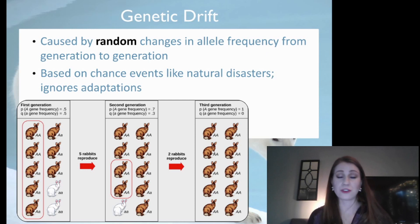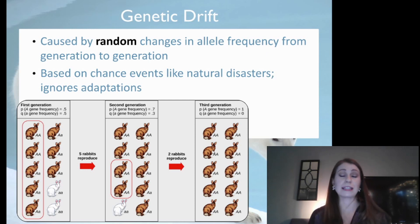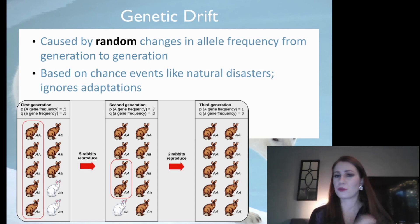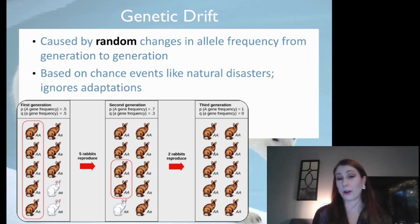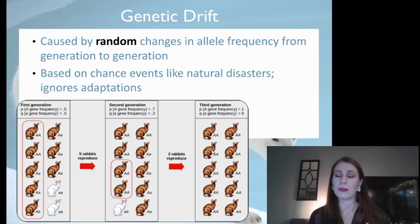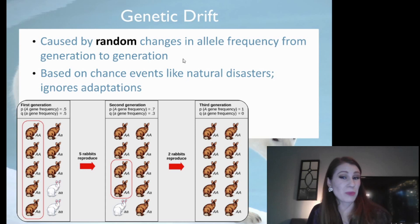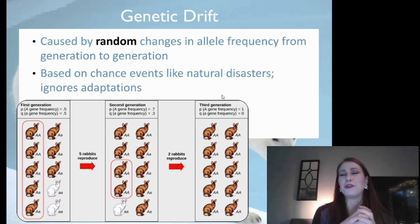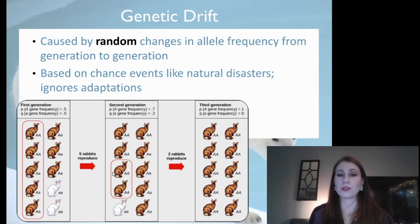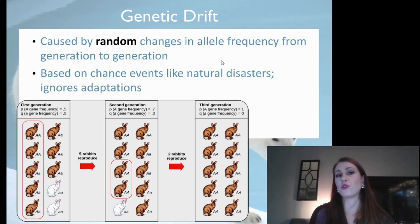This happens due to natural disasters with animals a lot. It can happen with things like shipwrecks for humans. It can also happen when humans decide to remove themselves from the general population and only intermarry or interbreed with each other. An example of this would be Amish communities — they tend to stay closely together in tight-knit communities without many outsiders. It acts a little bit like a natural disaster where you're not getting new alleles; you only have those alleles, and you get stuck with them.